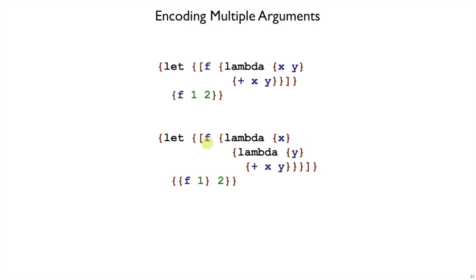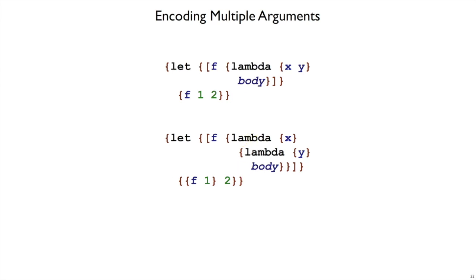The way we call this function is not f with two arguments like that, but we give it a first argument and then a second argument. These two programs are equivalent in that they both return three, but the second case uses a smaller language feature: lambdas with just one argument.